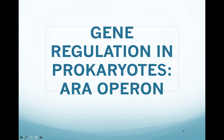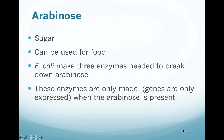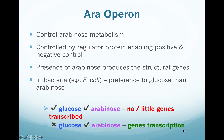The last operon we're going to look into is gene regulation in prokaryotes: the ara operon. Arabinose is a type of sugar, unlike tryptophan which is an amino acid, so as a carbon source it can be used for food. In E. coli, it makes three enzymes needed to break down arabinose. You can guess that arabinose again has similar catalysis as in the lac operon, which is catabolism. These enzymes are only made, meaning genes are only expressed, when arabinose is present.